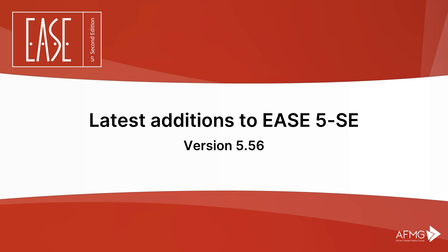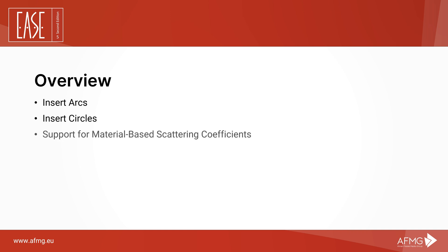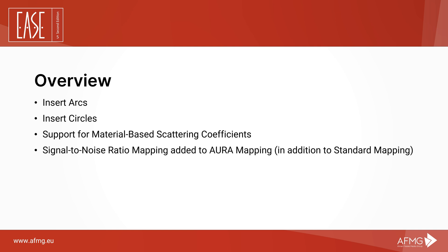Welcome to the overview of version 56 of EASE 5 2nd Edition. In this version, the following major features have been included: insert arcs, insert circles, support for material-based scattering coefficients, and signal-to-noise ratio mapping for aura mapping results.